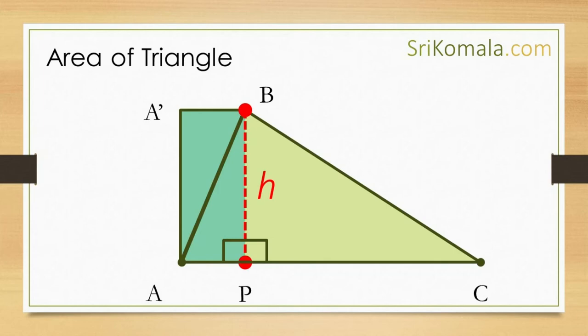Next, let us put the same triangle on the top of triangle A B P. Please see the figure for better understanding. This will give us rectangle A P B and A dash.